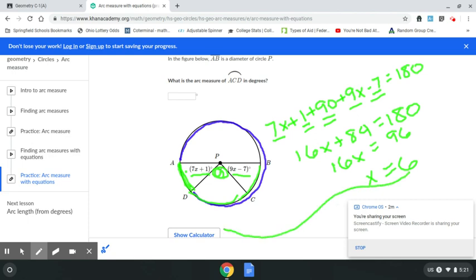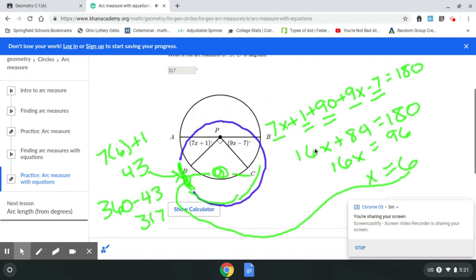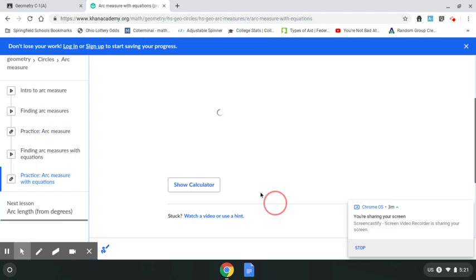Now again, that's not my answer. I've got to take this and plug this in. 7 times 6 plus 1 gets me 43. But that isn't even my answer because 43 is this arc right here. I need everything but that arc. My answer comes by taking 360 minus 43 and that's 317. So let's go up here, let's type in 317. And we got that one. All right, next question.